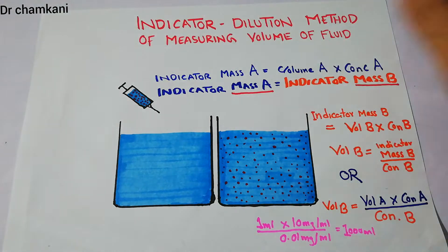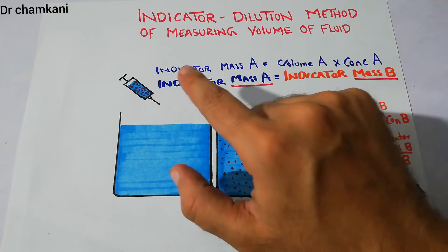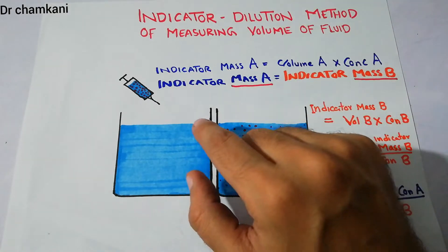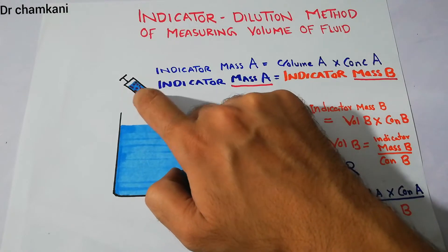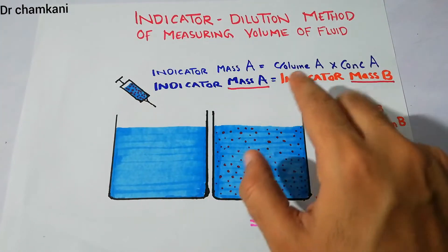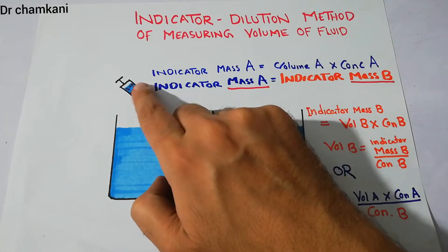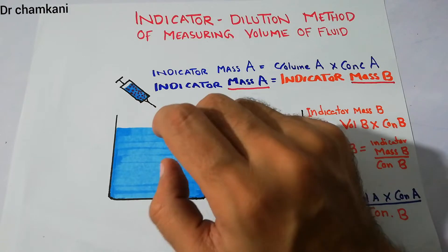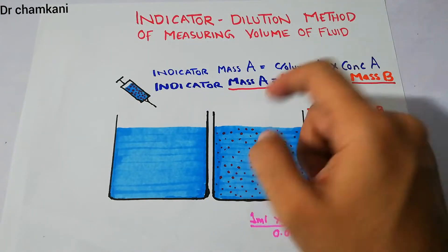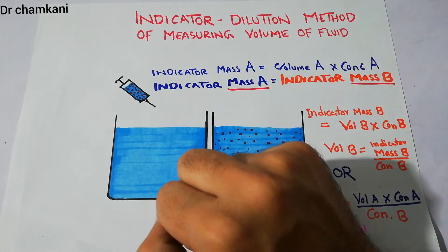To start, we first consider the mass of our indicator. The mass of this indicator is basically the product of volume and concentration. Regarding this indicator or dye, we know its volume and we also know its concentration, and the product of its volume and its concentration is basically its mass.